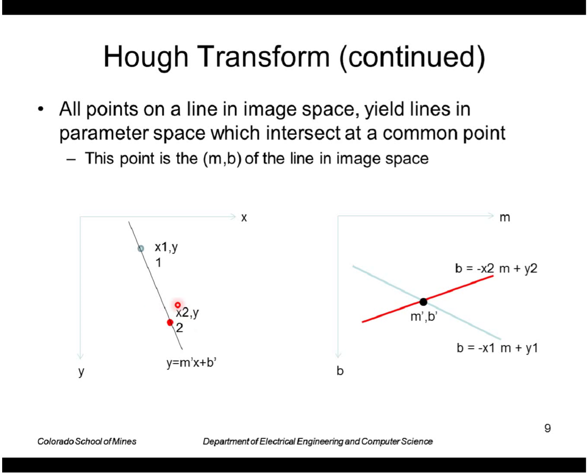So those are the points that lie on this red line in m and b space. Where these two lines intersect in m and b space, this particular value of (m', b'), that's the equation of the line that passes through both points. So that's the idea: we look for intersections in this space.